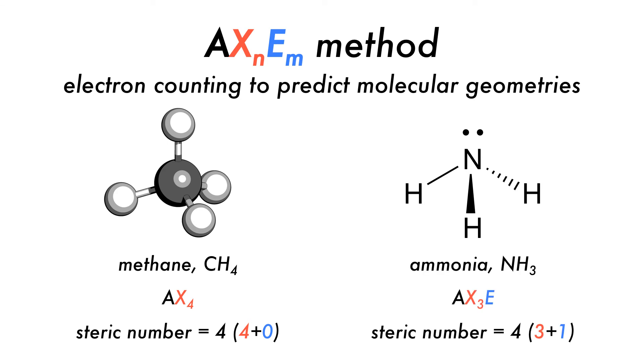In the case of ammonia NH3, there are three ligand hydrogen atoms and one lone pair, which when expressed in terms of AXE is AX3E1 with a steric number of 4.